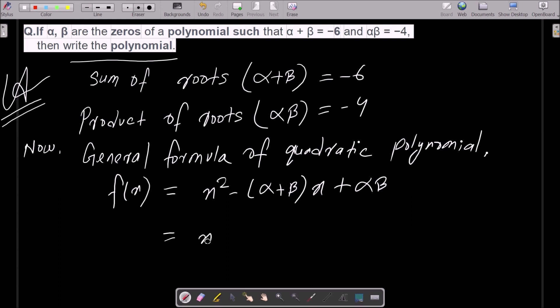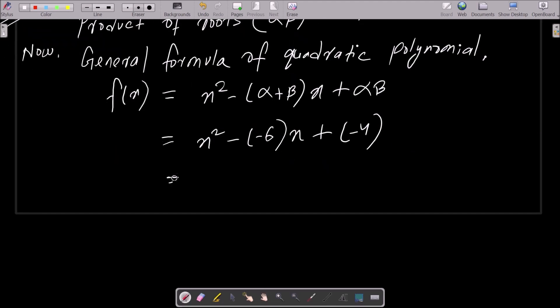The next is here you need to put the value. X square, alpha plus beta the value is now minus 6, and here x alpha into beta the value is now minus 4. Now the next is here x square, this is minus minus that changes to plus, this is 6 here, plus minus minus.